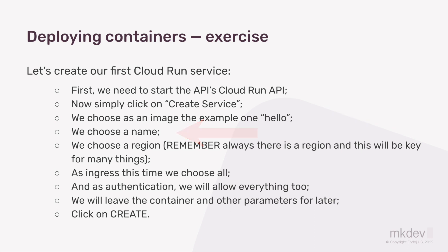We have a name and a region. The region, as we said, is one of the key elements in Google Cloud because everything is going to be located in a region and everything depends on that. When you have a component in one region and want to connect it to another component in another region, you're going to use something called a VPC serverless connector. There must be a match between all the components across the different regions.